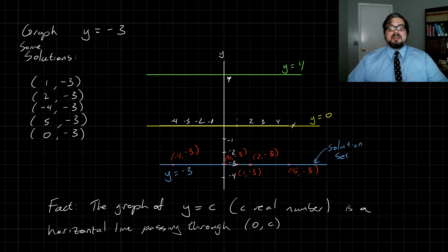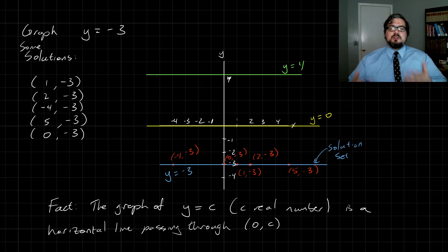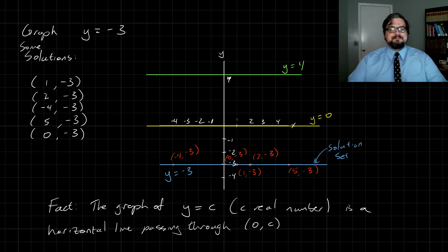These are how we describe vertical and horizontal lines. Whenever an equation simplifies down to a point where there's only one variable left, you're going to get either a vertical or horizontal line. If you have an x and a y in your equation even after simplifying as far as possible, you're not going to get a vertical or horizontal line — it's going to be sloped one way or the other. Vertical lines have simple equations of just x equals a number; horizontal lines have y equals some number. That's how we handle graphing horizontal and vertical lines.